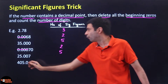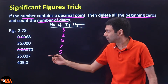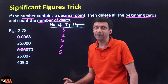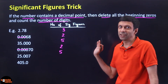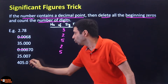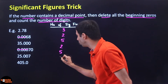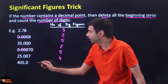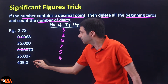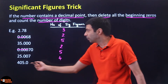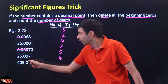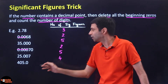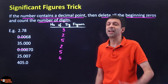Now what about 405.0? There are 2 zeros: one is in the middle, one is at the end. There is no beginning zero, so all the digits are going to be counted: 1, 2, 3, 4 — four significant figures. The zeros after the decimal are significant, meaning this measurement was made to that level of accuracy.